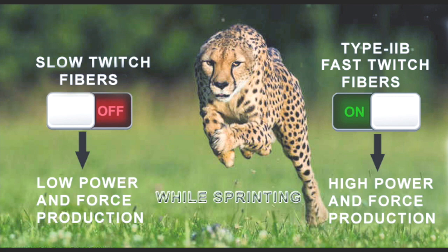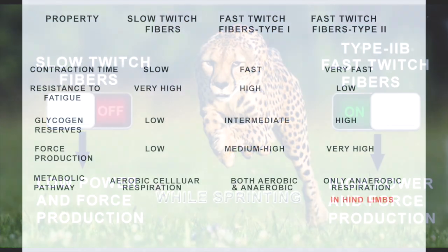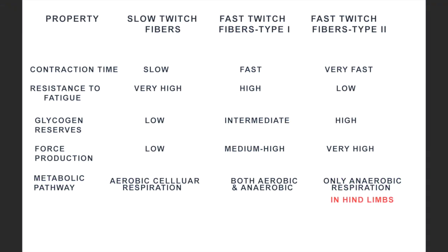In this chart you can see the properties of slow twitch fibers, fast twitch fibers type 1, and fast twitch fibers type 2. It is the fast twitch fibers type 2 that are present in the cheetah, enabling it to run so fast. The contraction time is very fast, but the resistance to fatigue is very low in fast twitch type 2 fibers — that is why the cheetah stops after a short run. Glycogen reserves are very high in type 2 fast fibers and force production is also very high compared to slow twitch fibers.